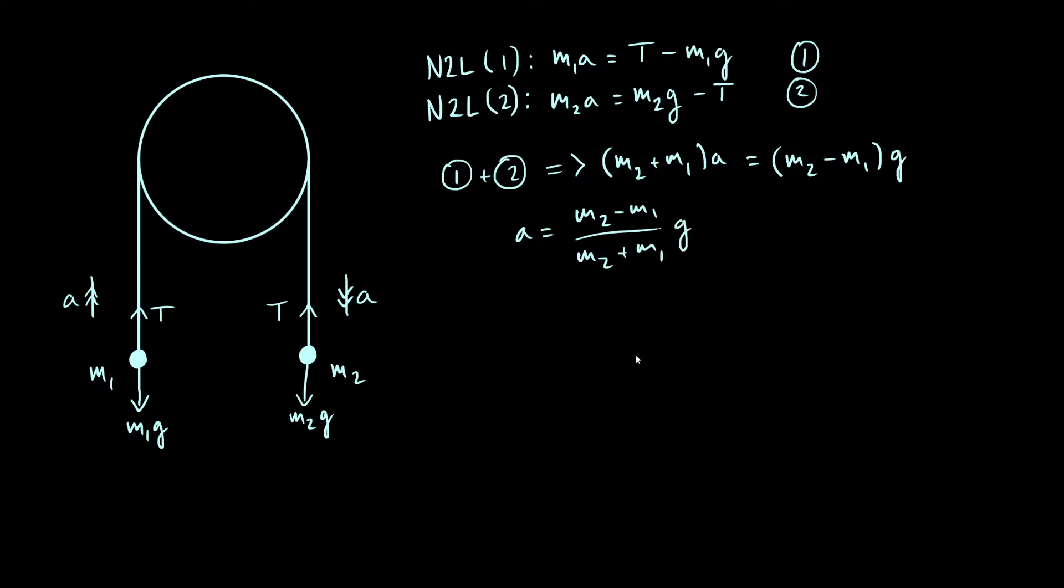Okay, so the acceleration depends on the difference between the two masses, and so if M2 is bigger than M1, then acceleration is going to be positive, meaning if M2 is bigger than M1, the accelerations are in the directions that we've drawn them on, so M2 is going to move downwards. That's consistent with what we'd expect. If it's the other way around and M1 is bigger than M2, then the numerator of this fraction would be negative, so the acceleration is going to be negative, implying that the accelerations are in the opposite direction to how we've drawn them.